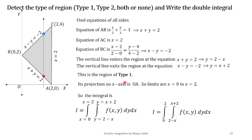So to recap: whenever we have a region, we pass a vertical line across it to check if it is a Type 1 region, then follow the procedure to write the double integral for that region. This was our first example. In our next video lecture, we shall see further examples related to formulating double integrals. Thanks for joining in — if you found this helpful, please hit the like button and share it. Keep solving a good amount of mathematics!